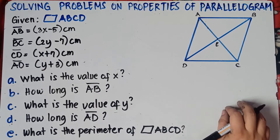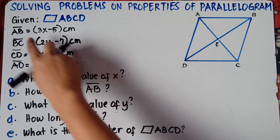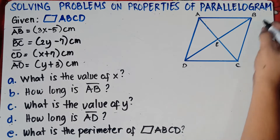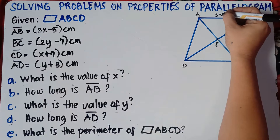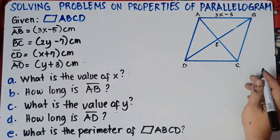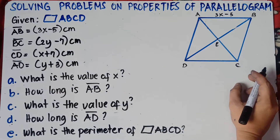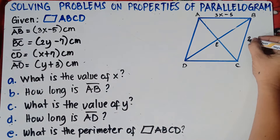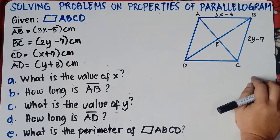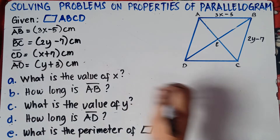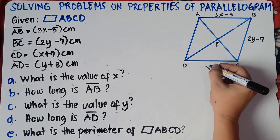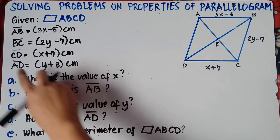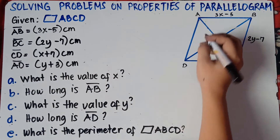First step is we need to label this one. So given AB, we have 3X minus 5. I will just ignore the cm units. For BC, that is 2Y minus 7. For CD, we have X plus 7. And for line segment AD, that would be Y plus 3.